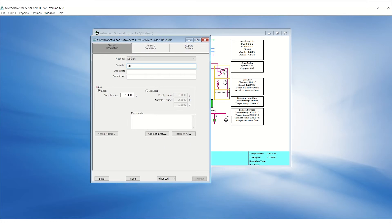Under the Sample Description tab, type in the sample name and the operator's initial. Also, enter the empty tube mass and the sample plus tube mass.